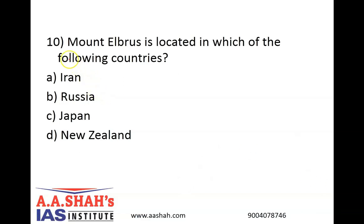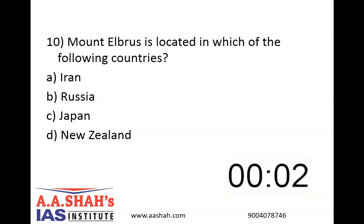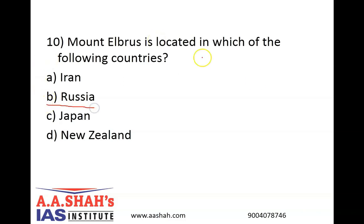Let's move on to the last question, number 10. Mount Elbrus is located in which of the following countries? A: Iran. B: Russia. C: Japan. D: New Zealand. The correct answer is B, Russia. Mount Elbrus is a dormant volcano in the Caucasus mountains in southern Russia and it is the highest mountain in Europe. Please note Elbrus should not be confused with the Alborz mountains in Iran. The Alborz mountain range forms a barrier between the South Caspian and the Iranian plateau. Mount Damavand, the highest mountain in Iran, is located in the central Alborz mountains. So there is a difference between Elbrus and Alborz.